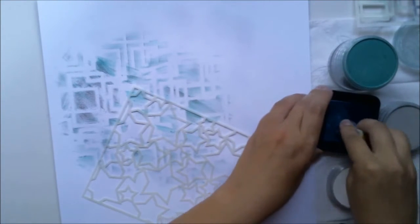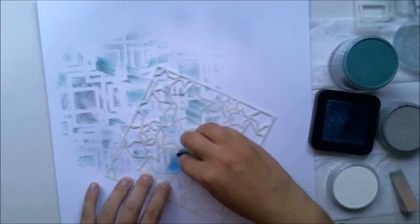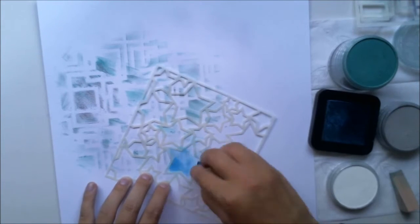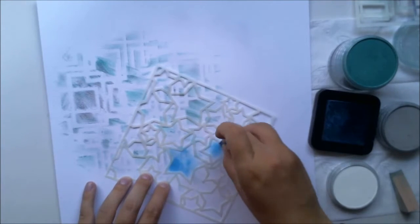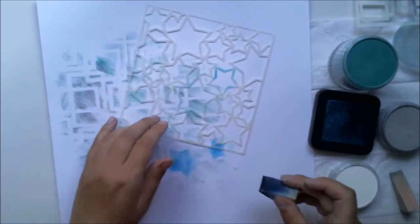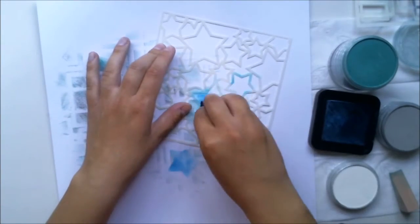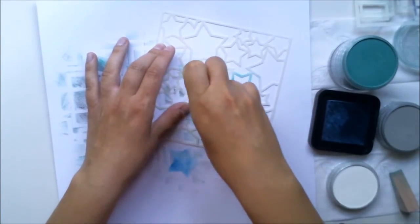Next I'm using a stars stencil and blue Distress ink—to be exact, this was Mermaid Lagoon. I don't mind if those stars aren't even with sharp edges. I just want them to be here and there, some kind of star-like shape.